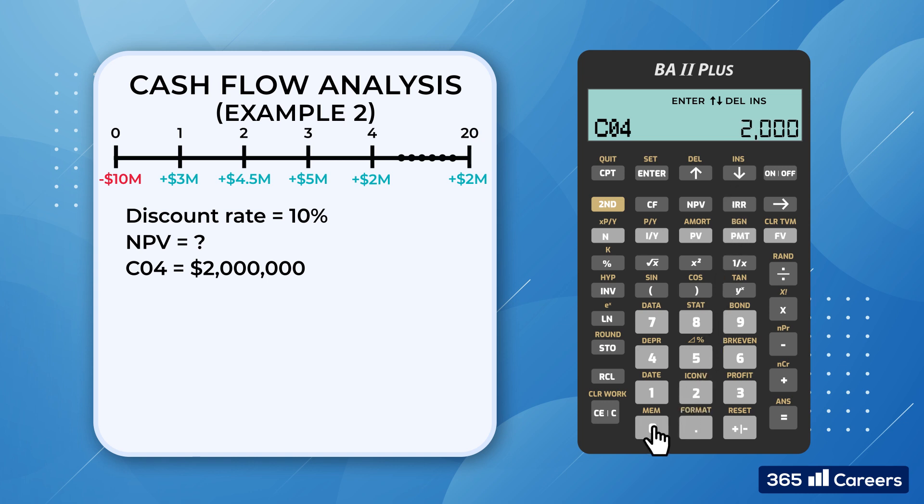Now instead of entering the cash flows from CO4 to C20 manually, we could change the frequency, FO4 from 1 to 17. Then we press NPV. The discount rate, I, equals 10%. We scroll down and compute for NPV to obtain that it's $12,256,278.